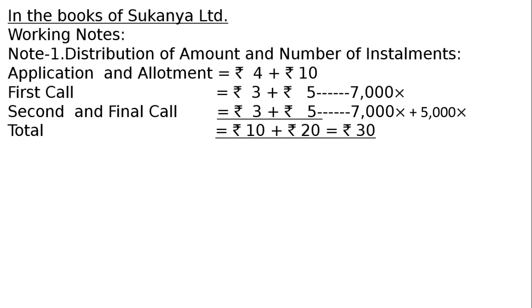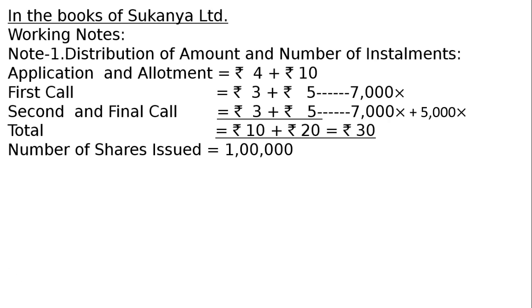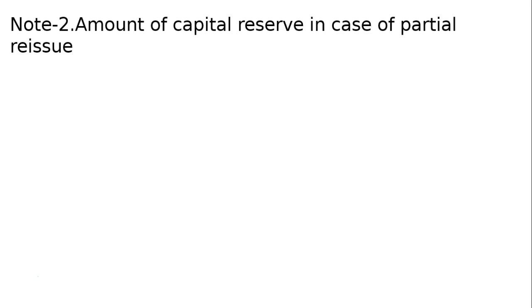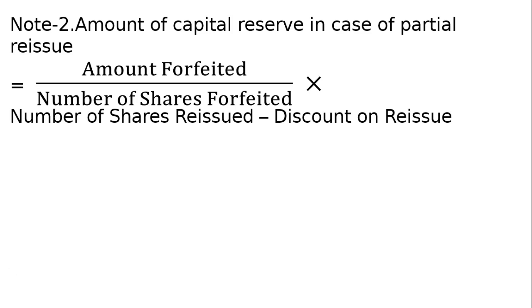That other shareholder's name is Namit. Number of shares issued: 10,000. Number of applications received or shares subscribed: 96,000. It is a case of under-subscription. Note: Amount of capital reserve in case of partial reissuing is — amount forfeited upon number of shares forfeited, multiplied by number of shares reissued, minus discount on reissue.